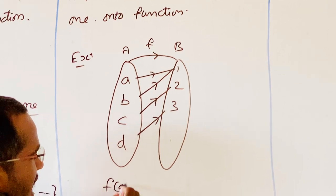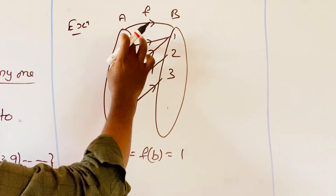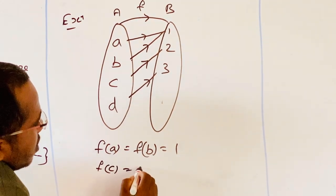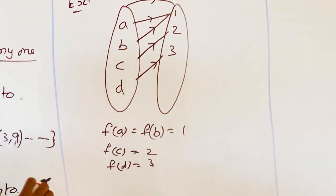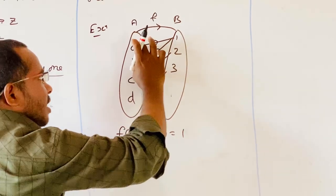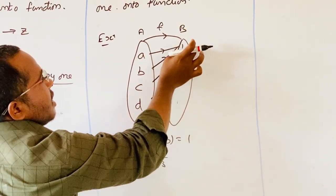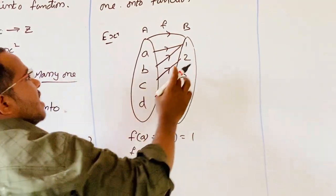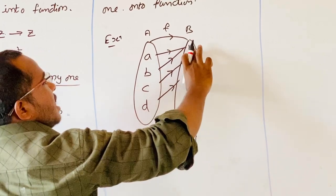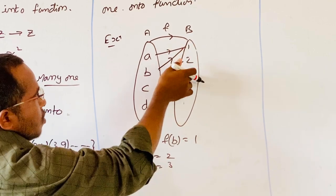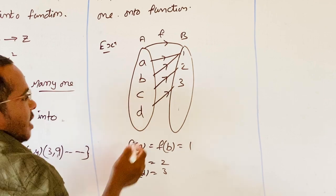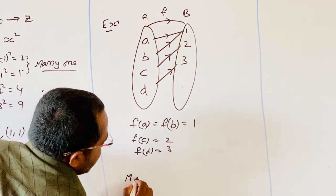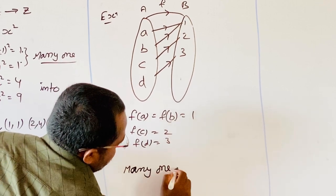So f(a) = 1 and f(b) = 1 — for these two elements, the image is 1. f(c) = 2 and f(d) = 3. Since a and b both map to 1, this satisfies the many-one condition. And since every element of B — 1, 2, 3 — has a preimage in A, this is an onto function. So this is a many-one onto function.